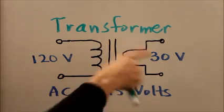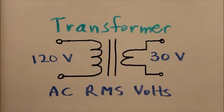Notice that 30 is one-fourth of 120 so this is a step down transformer that steps the voltage down by a factor of four, that is to say divides the voltage by four.